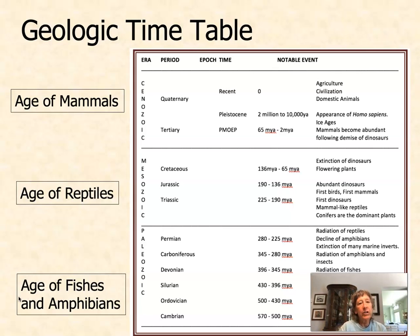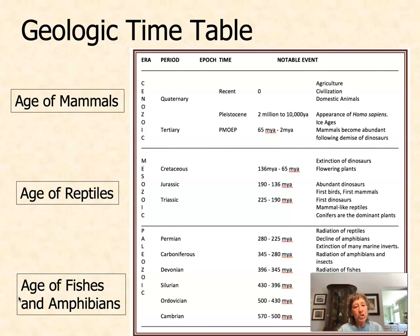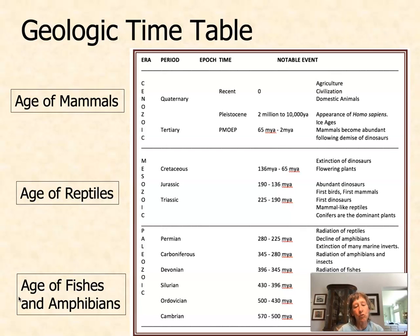We're going to look at extinction through geologic time. This is a geologic timetable, and I'm going to ask you to know three eras: the Paleozoic era, the oldest era you need to know; the Mesozoic era; and the Cenozoic era. I refer to the Paleozoic era as the age of fishes and amphibians, going from about 225 million to about 500 million years ago. The Mesozoic era can be referred to as the age of reptiles or the age of dinosaurs — you may have heard of one of its periods if you've heard of the movie Jurassic Park.